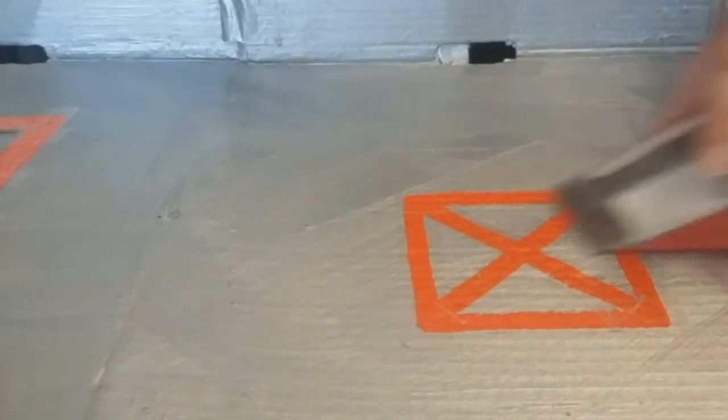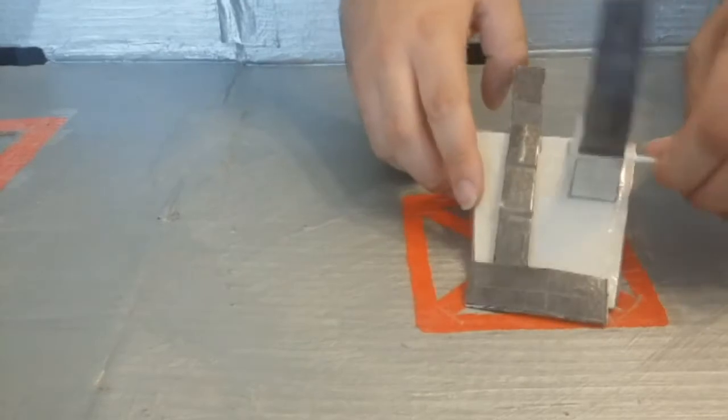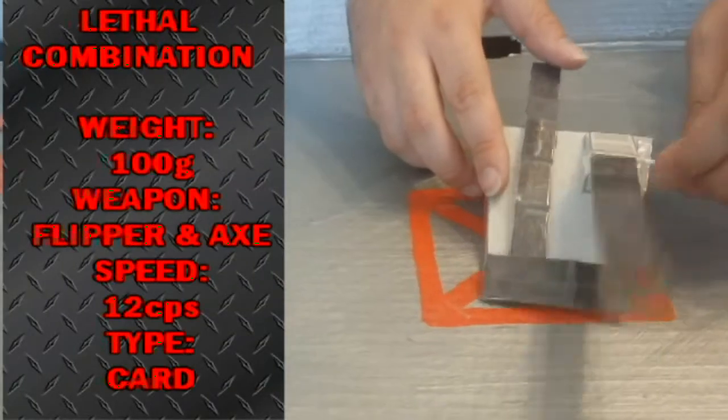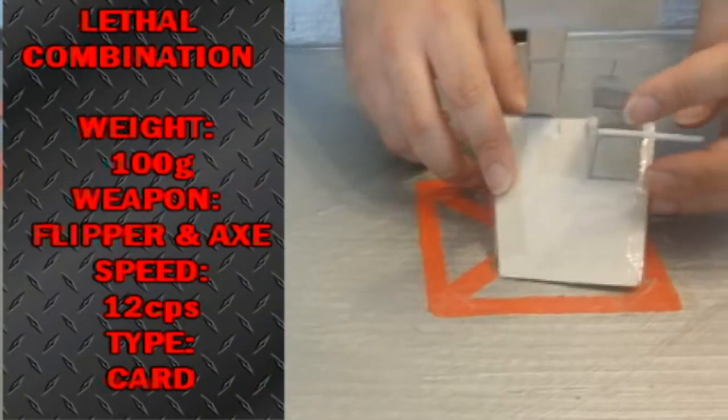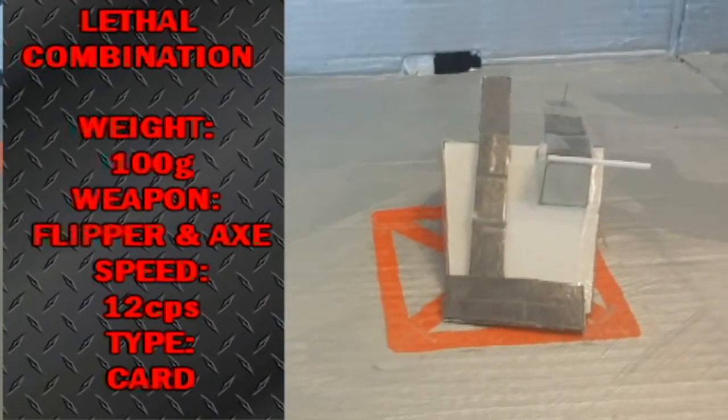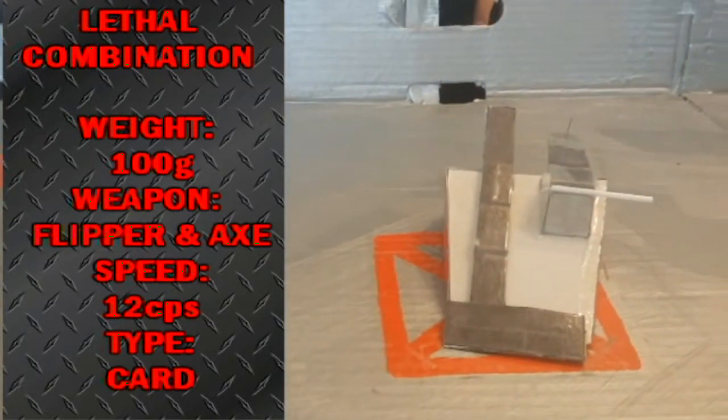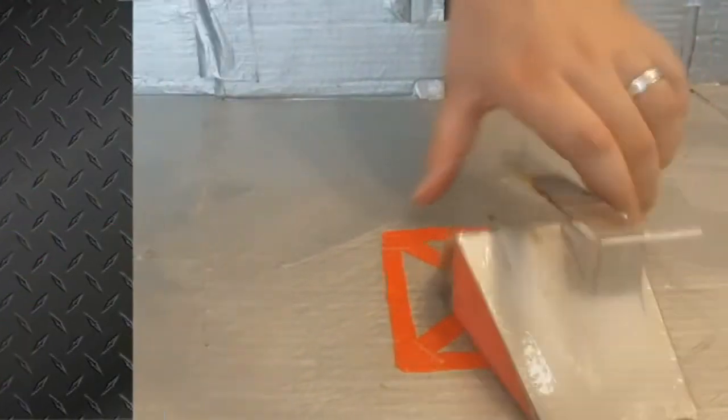From Argyne and Beats, Lethal Combination. Named so because of their dual weaponry, a flipper and axe combination. Both weapons are very powerful. It's heavy at 100 grams. Its speed is relatively quick at 12 centimeters per second, but the card armor is slightly weak.